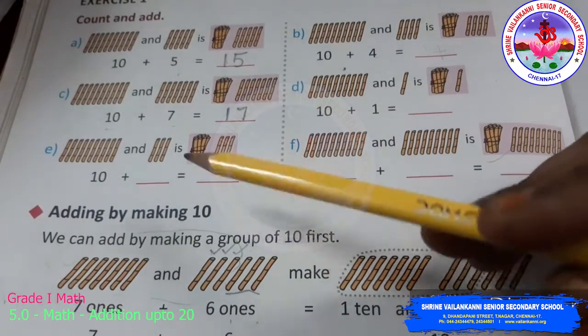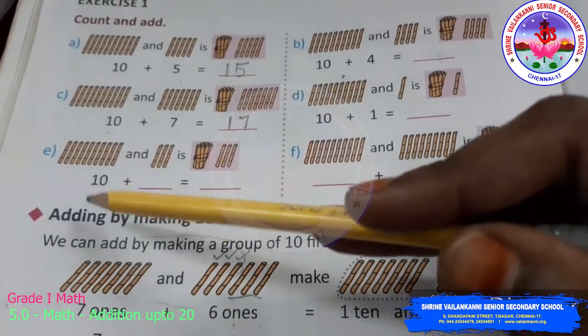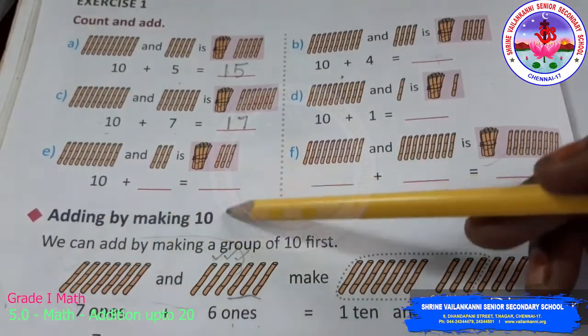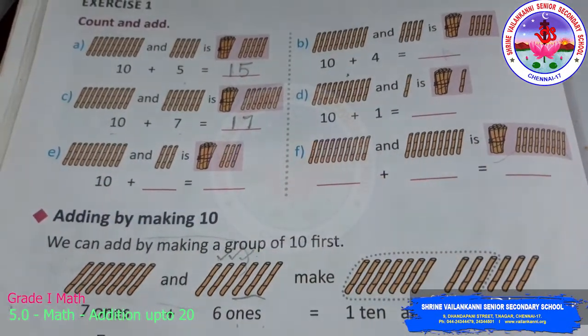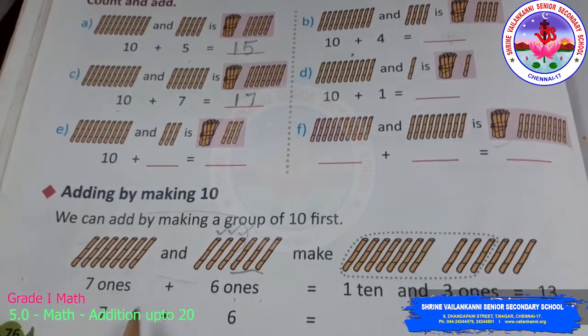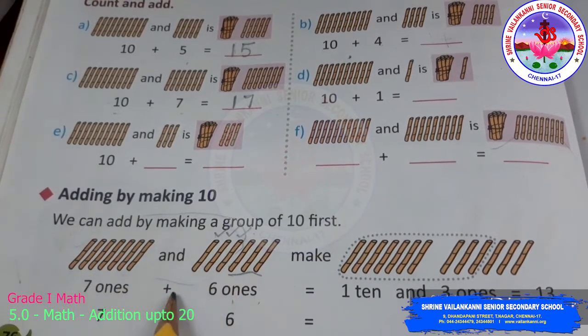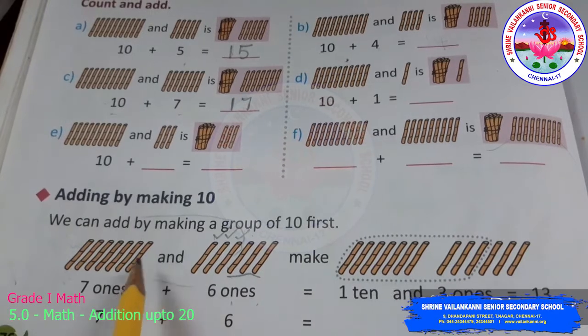Till now we saw how to add when one number is 10. But now we are going to see how to add by making 10. When you get two numbers, you are getting 7 ones and 6 ones. Here also we can make one number as 10 and then add easily. How is it possible?